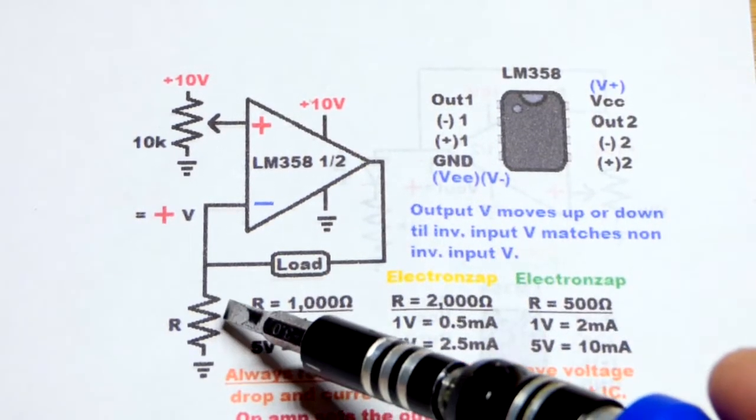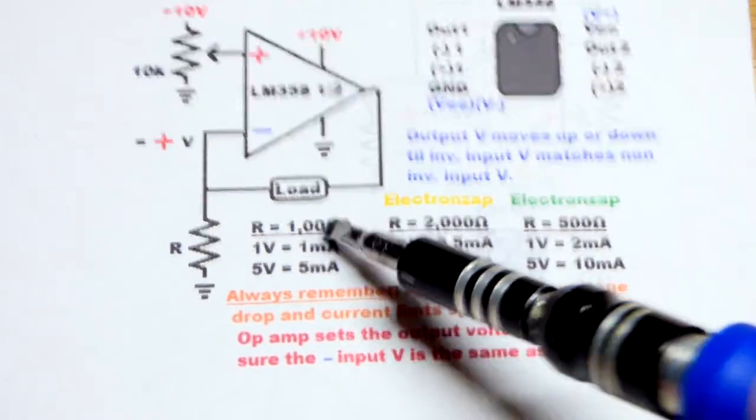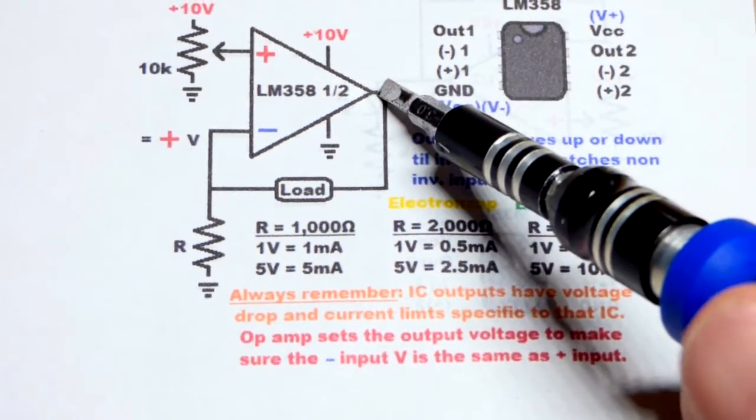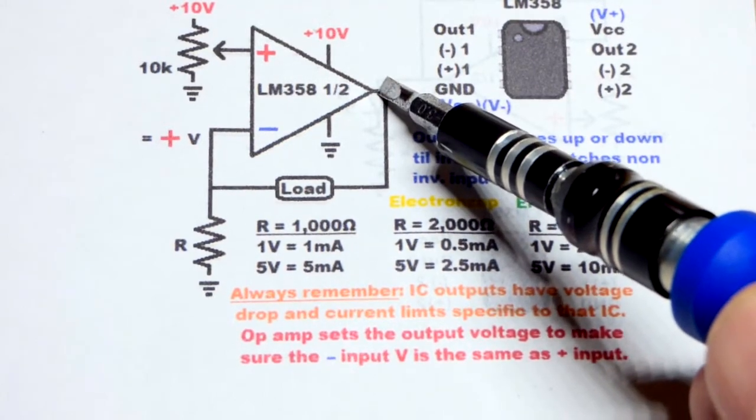We had the resistor here that set the current. As we said before, we used 5 volts so we got 5 milliamps, even as the load changed. We saw that the output just had to raise the voltage more to overcome more load within its limits.